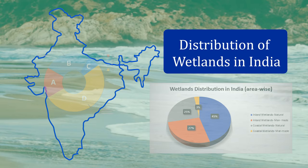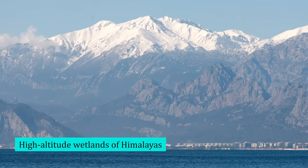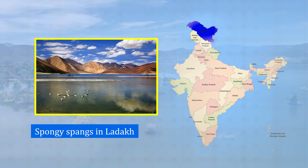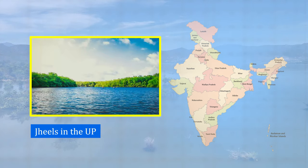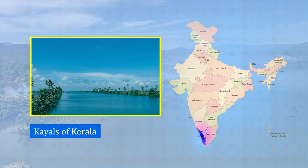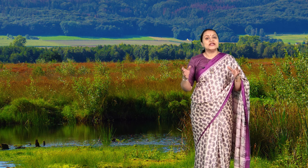After knowing what are wetlands, how they are formed, and the components of wetlands, let us look at the distribution of wetlands in India. India has nearly 4.86% of its land area as wetlands. There are many types of wetlands in India, and they are called by many different names — from the high-altitude wetlands of Himalayas to the saline flats of the west, from the spongy spanks of Ladakh to the fish bheris of Bengal, from jheels in Uttar Pradesh to the kulams of Tamil Nadu, from khareens of Rajasthan to kayals of Kerala, from chaws of Bihar to beals of Assam. The diversity of wetland types in India is fascinating.